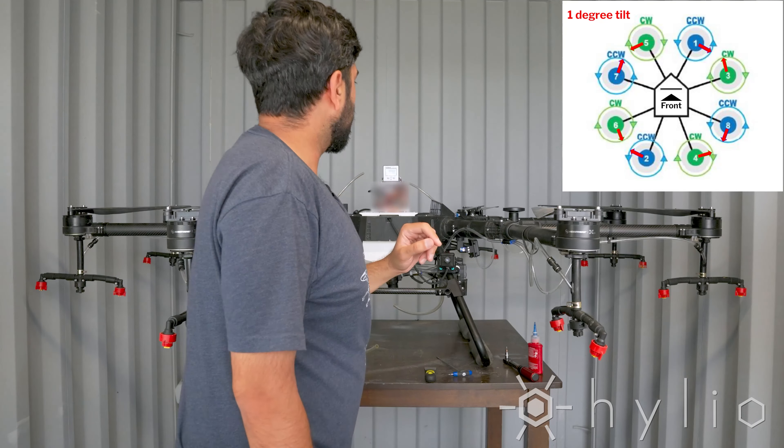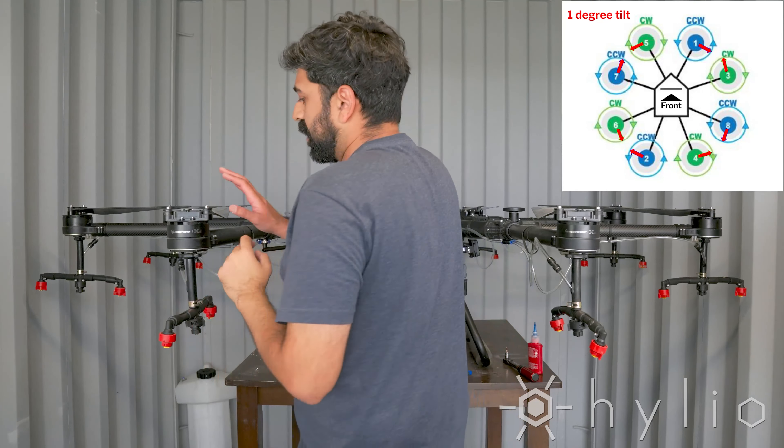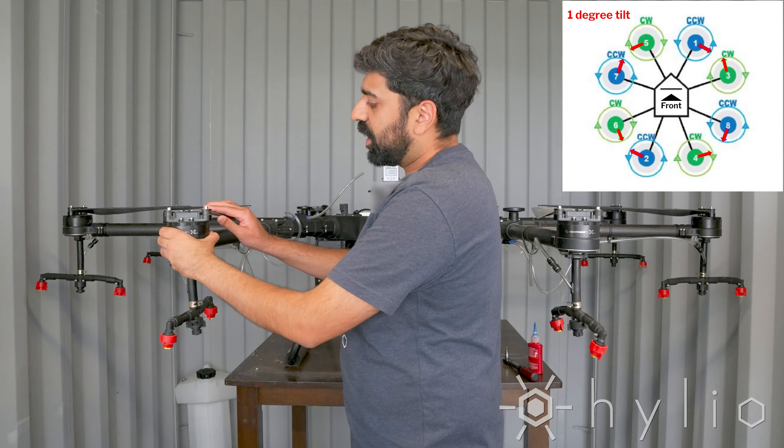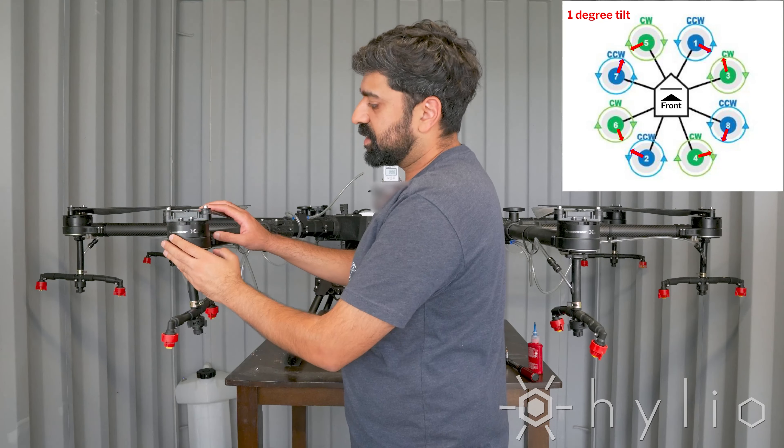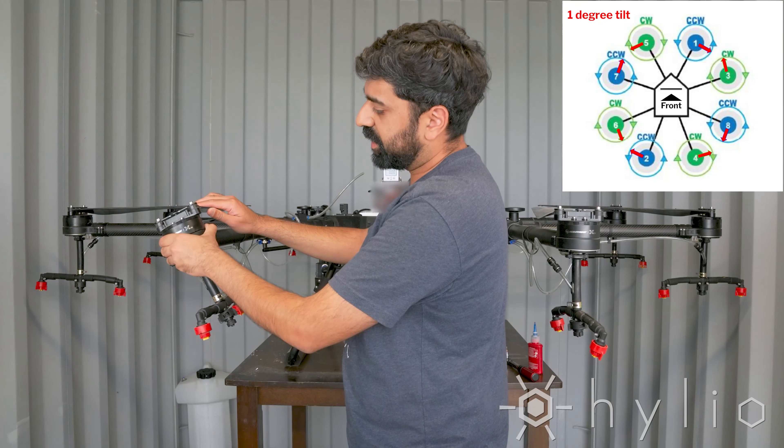For this demonstration we're going to go ahead and do these front two motors. Motor one here is a counterclockwise motor, and this new procedure involves turning it one degree off intentionally in the same direction as the orientation of the motor, which in this case would be counterclockwise. So turning to the left.